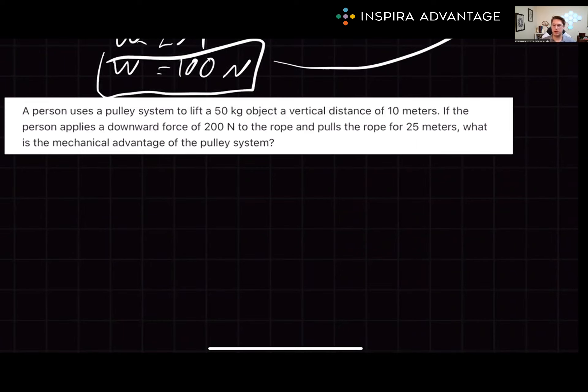Now, finally, let's do one even tougher problem. A person uses a pulley system to lift a 50 kilogram object a vertical distance of 10 meters. The person applies a downward force of 200 newtons to the rope and pulls the rope for 25 meters. What is the mechanical advantage of the pulley system? Take a few moments and see if you can solve this one yourself.